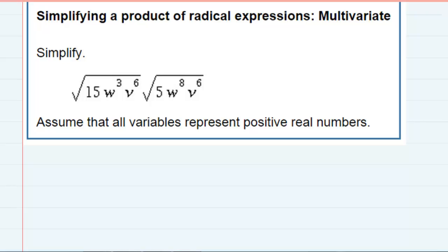Simplifying a product of radical expressions. We can either multiply these expressions first and then simplify them, or simplify and then multiply, but it's usually best to simplify, if you can, in the beginning to keep things from getting larger whenever we multiply.